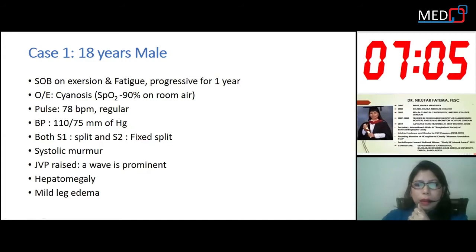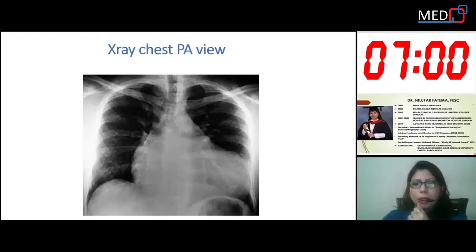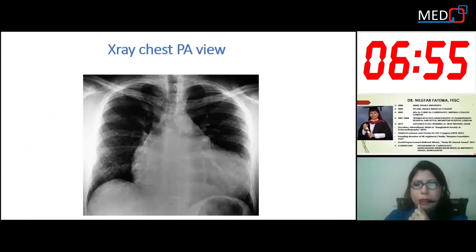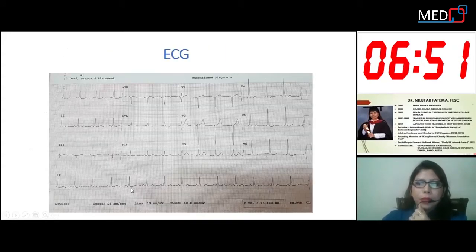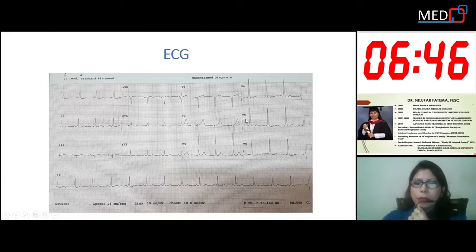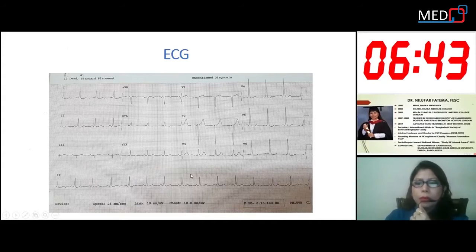JVP is raised with a prominent A-wave, hepatomegaly, and mild pedal edema. The chest X-ray peer view shows cardiomegaly with RV-type apex. The ECG of the patient shows a short PR interval with a delta wave present, more in favor of WPW syndrome.